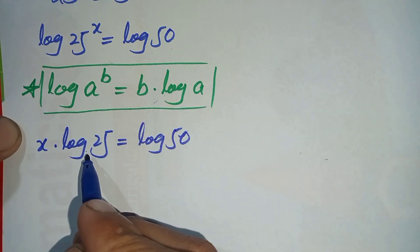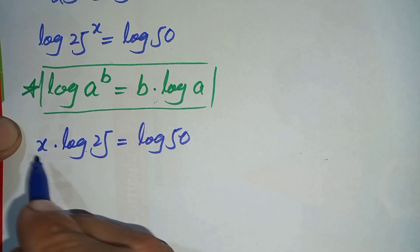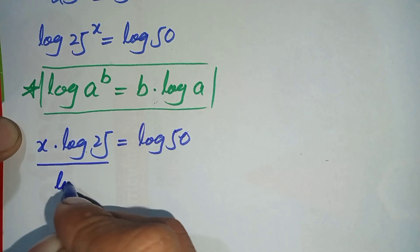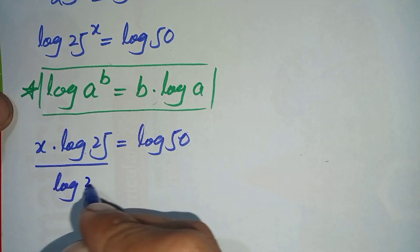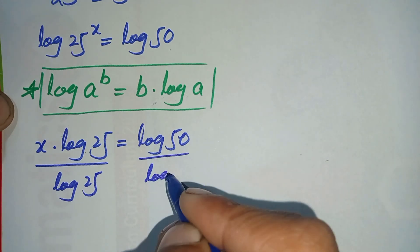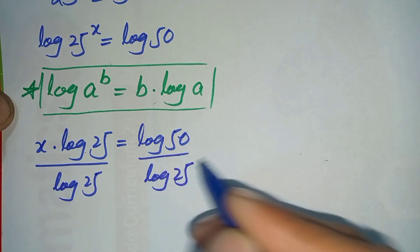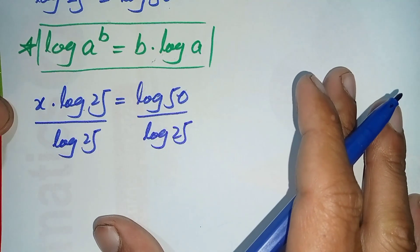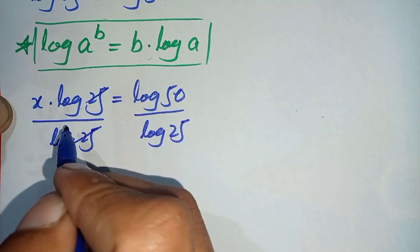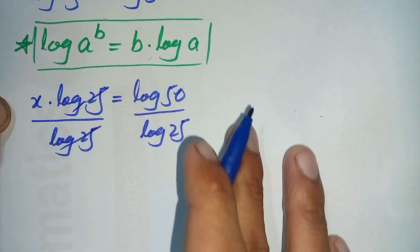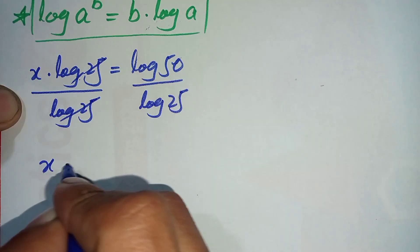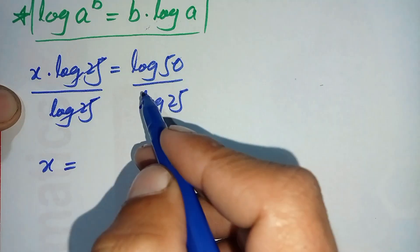Next, we will divide both sides by log of 25 to eliminate it from the left-hand side. On the left-hand side these two log(25) values cancel with each other, so only x will be left.